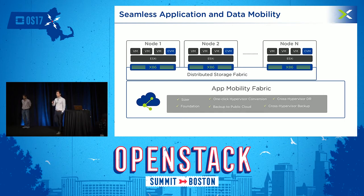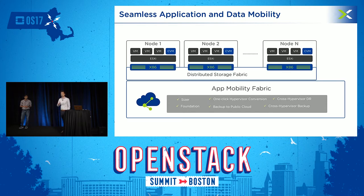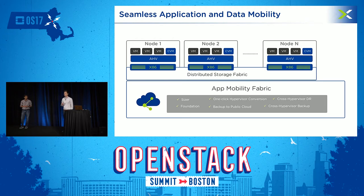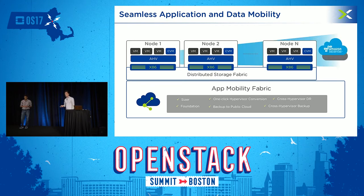Within the product, we also made sure you can move your runtimes from hypervisor A to hypervisor B — we do not want to lock you into a specific hypervisor. With a single click, you can move from ESXi towards the embedded virtualization feature within Nutanix called AHV. And if you want, you can also move data from your on-premise infrastructure towards one of the public cloud services.